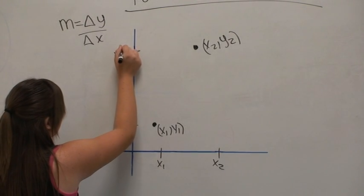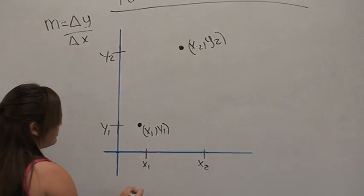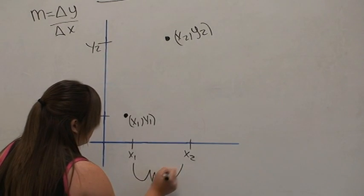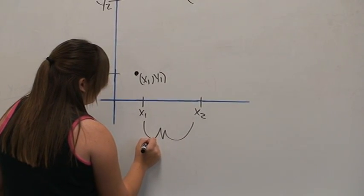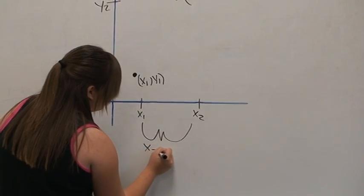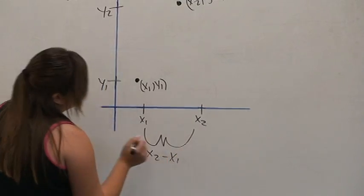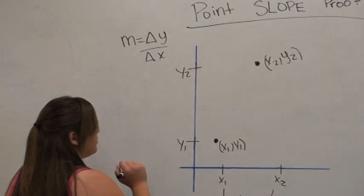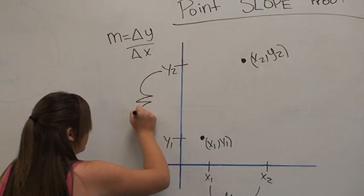The change in y is defined as the difference of y's, the change in x is defined as the difference of x's. So we subtract them: x2 minus x1 is the change in x, and y2 minus y1 is the change in y.